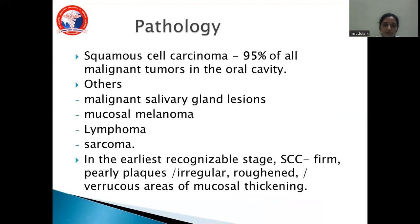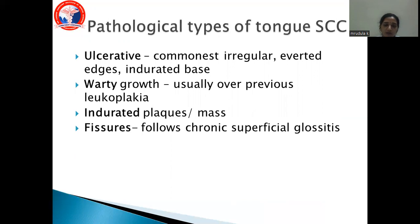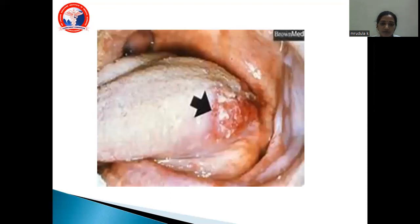Squamous cell cancer accounts for about 95% of oral malignancies. Other types include malignant salivary gland tumors, mucosal melanomas, lymphomas, and sarcomas. In the earliest recognizable stage, squamous cell cancer presents as firm, pearly plaques or irregular rough areas of mucosal thickening. Morphological types of tongue squamous cell cancer include ulcerative (most common, with irregular everted edges and indurated base), verrucous (usually over previous leukoplakia), infiltrative masses, and fissure types. This image shows an ulceration on the lateral surface of the tongue.